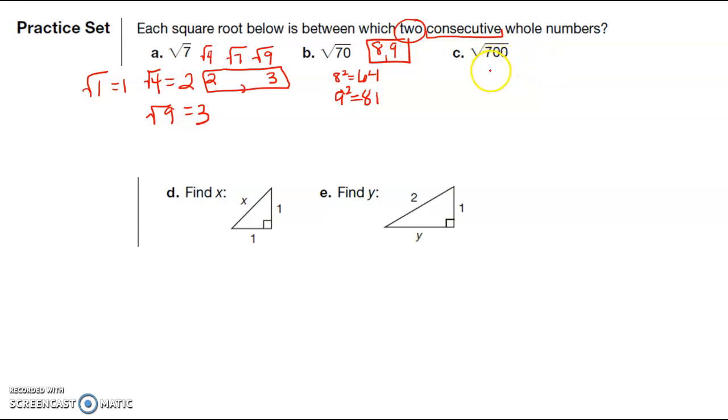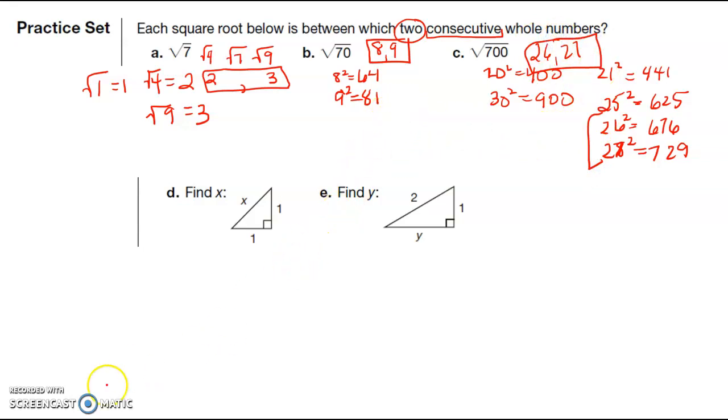And then the square root of 700. If I take 20 squared, I get 400, 30 squared, I'm going to get 900. 21 squared is going to be 441. Let's do 25 squared, I get 625, that's getting close. What's 26 squared? 676, even closer. 27 squared, 729, so it's going to be between 26 and 27 here. You can see this is kind of a trial and error process we've got going for this.